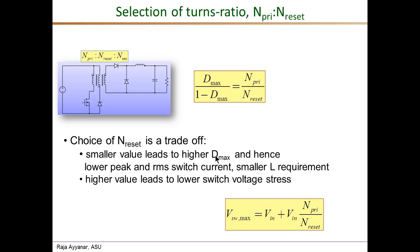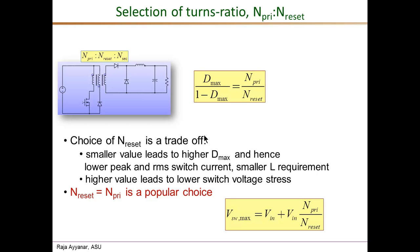However, a lower value of N_reset also results in a higher switch voltage stress, requiring higher voltage-rated MOSFETs, which have higher R_DS(on) and higher conduction losses. So it's a trade-off. Unless there are other compelling reasons, the choice of N_reset equal to N_primary is a good and popular choice. But if you have a large stock of high-voltage MOSFETs, you may purposely choose a lower N_reset to gain the benefits of increased D_max.